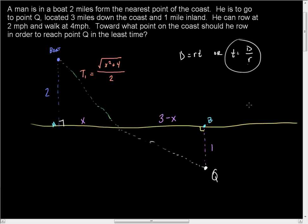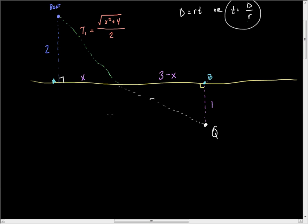On the flip side of that, he's got time two here. He's got to go a total distance of the square root of three minus X squared plus one squared, which is one. That's due to this triangle here. He travels at four miles an hour. Now let's go ahead and try to combine these. His total time taken is T1 plus T2. So T is equal to T1 plus T2.